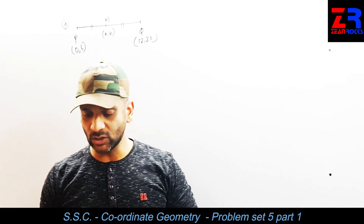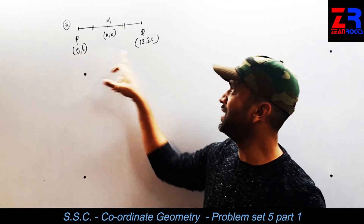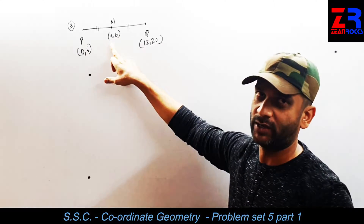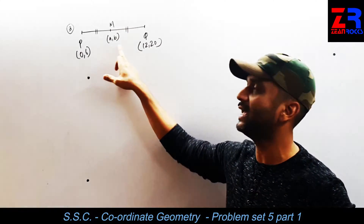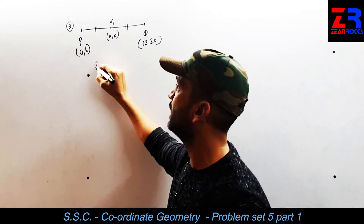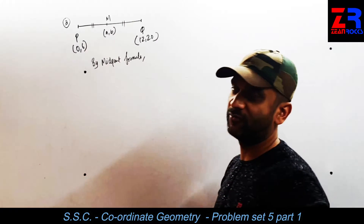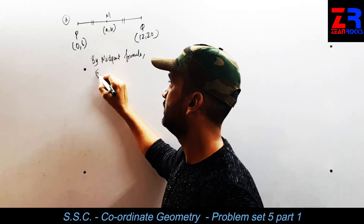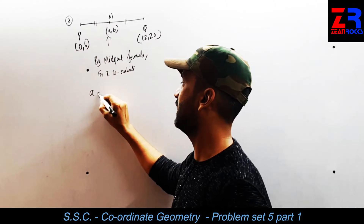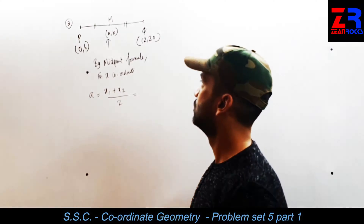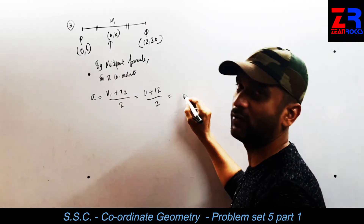This is question number 3: find the coordinates of the midpoint of line segment joining PQ. This is one of the easiest questions of the problem set. Let the midpoint of seg PQ be M with coordinates A, B. By the midpoint formula, the x-coordinate A equals x1 plus x2 divided by 2. x1 is 0, x2 is 12, so 0 plus 12 divided by 2 equals 6.